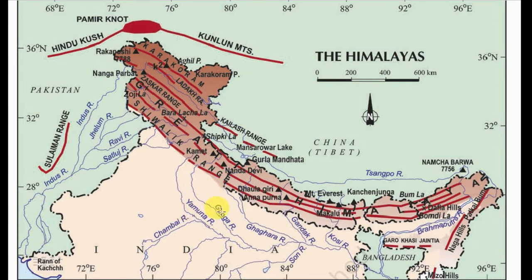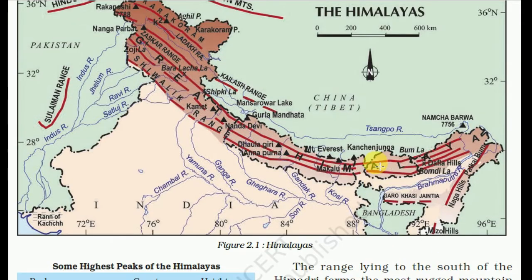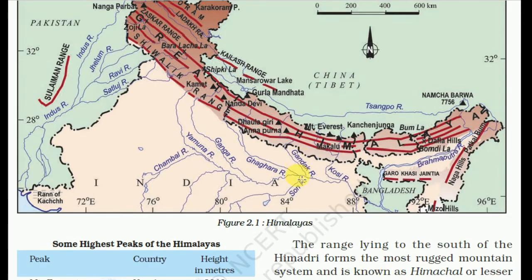All the rivers are coming from the Himalayas: Yamuna, Ganga, Ghaghra, Gandak, Purshi on the eastern side, and on the western side the Indus, Jhelum, Chenab, Beas, and Shipki La. You can pause this video and observe all these features and try to remember and understand them.